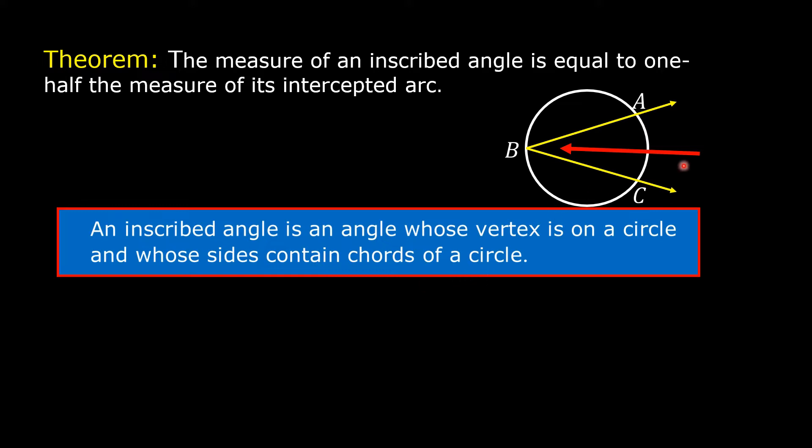In this illustration, the inscribed angle is angle ABC. Its vertex B is on the circle and its side BA contains chord BA and its side BC contains chord BC.